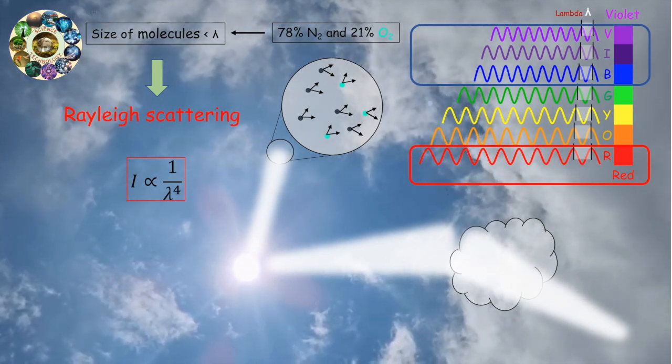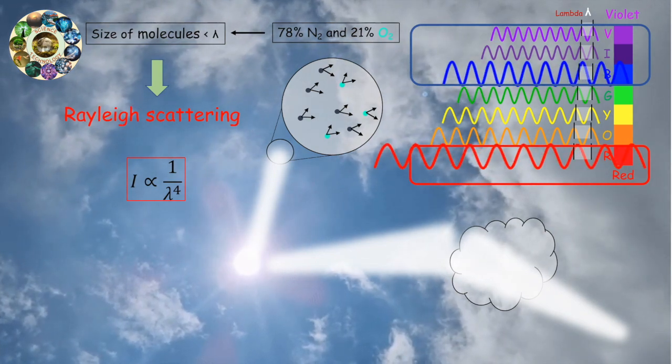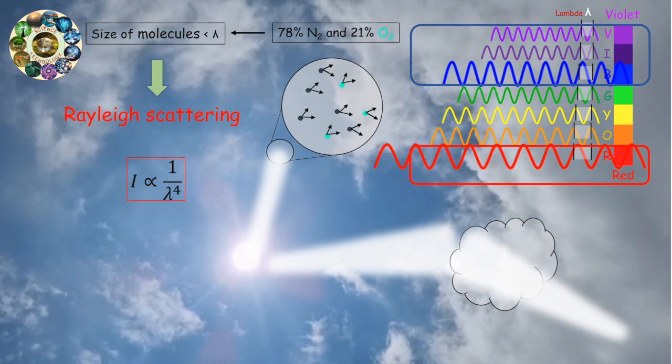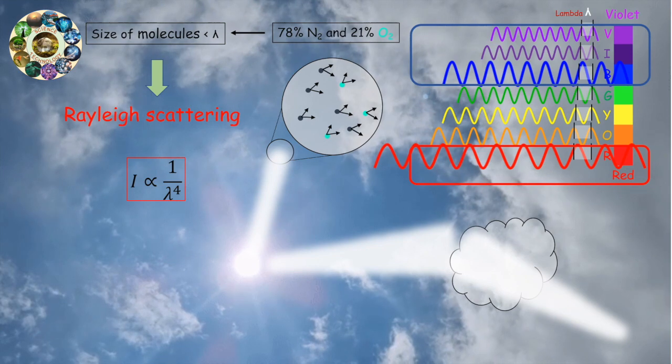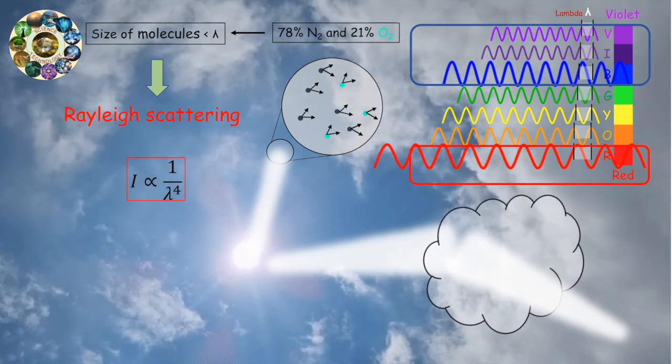For these particles, the difference between the scattering of blue and red light is not nearly so large as it is for gas molecules. Hence, our eyes receive substantial scattered light at all visible wavelengths, causing clouds to appear more white than blue, especially when viewed against a blue sky background.